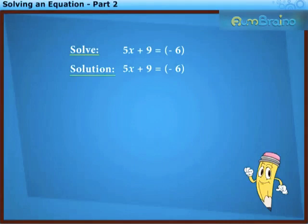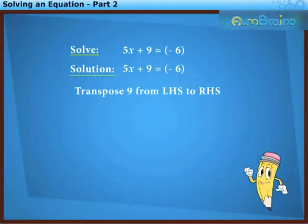To solve this equation, we will first transpose 9 from LHS to RHS. We get 5x is equal to minus 6 minus 9. That is, 5x is equal to minus 15.